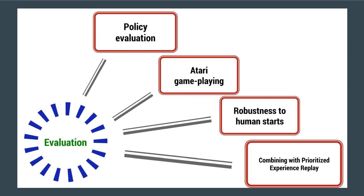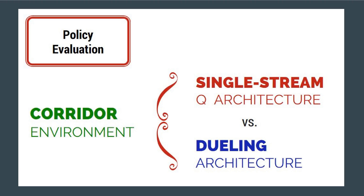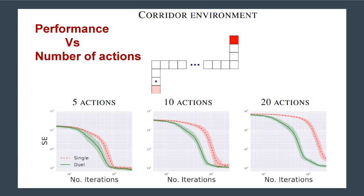There are four main areas where experiments were conducted: policy evaluation, Atari game play, robustness to human starts, and prioritized experience replay. In policy evaluation, the dueling architecture was compared to the single-stream Q architecture. The speed of convergence was found to be the same, but as the number of actions increases, the performance of the dueling network architecture proved much better and converged faster with fewer iterations.